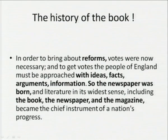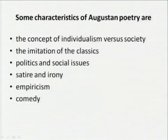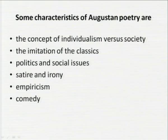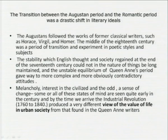The newspaper was born, and literature in its widest sense — including the book, the newspaper, and the magazine — became the chief instrument of a nation's progress. Characteristics of Augustan poetry included the concept of individualism versus society, imitation of the classics (which is why it was called the classical age), politics, social issues, satire, irony, empiricism, and comedy.